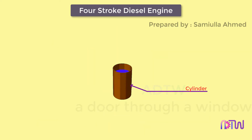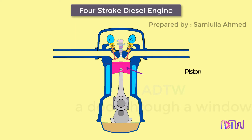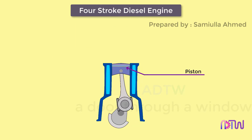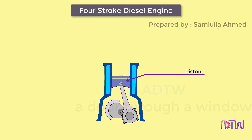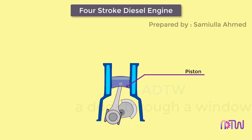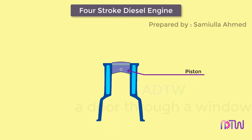The cylinder is a cylindrical vessel or space in which the piston makes a reciprocating motion. The piston is a cylindrical component fitted into the cylinder, forming the moving boundary of the combustion system. It fits perfectly into the cylinder, providing a gas-tight space with the piston rings and lubricant, and forms the first link in transmitting the gas forces to the output shaft.